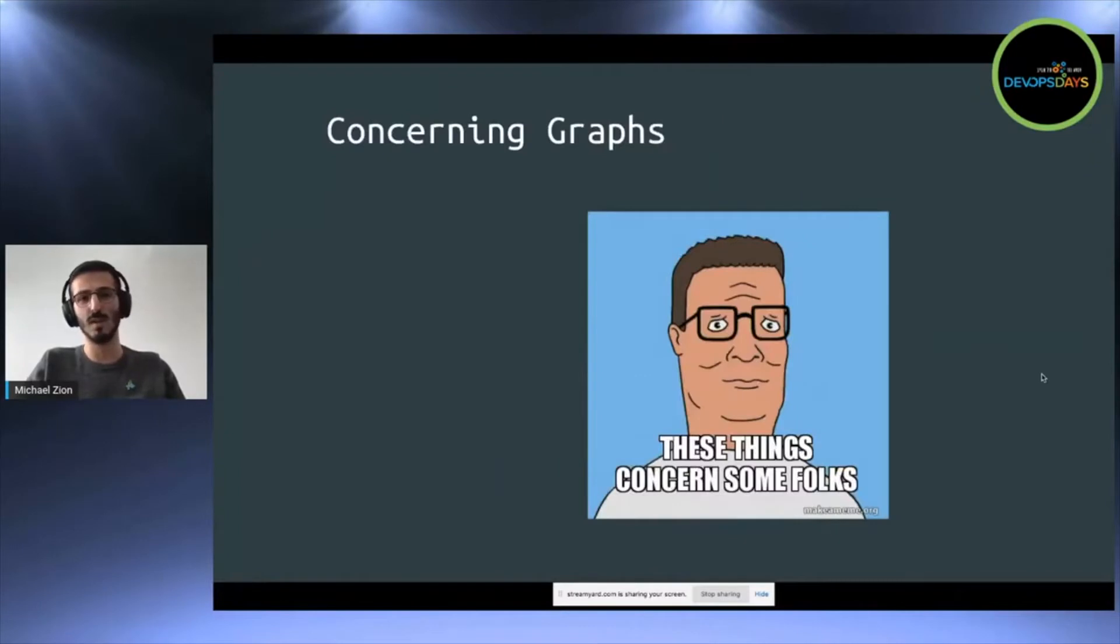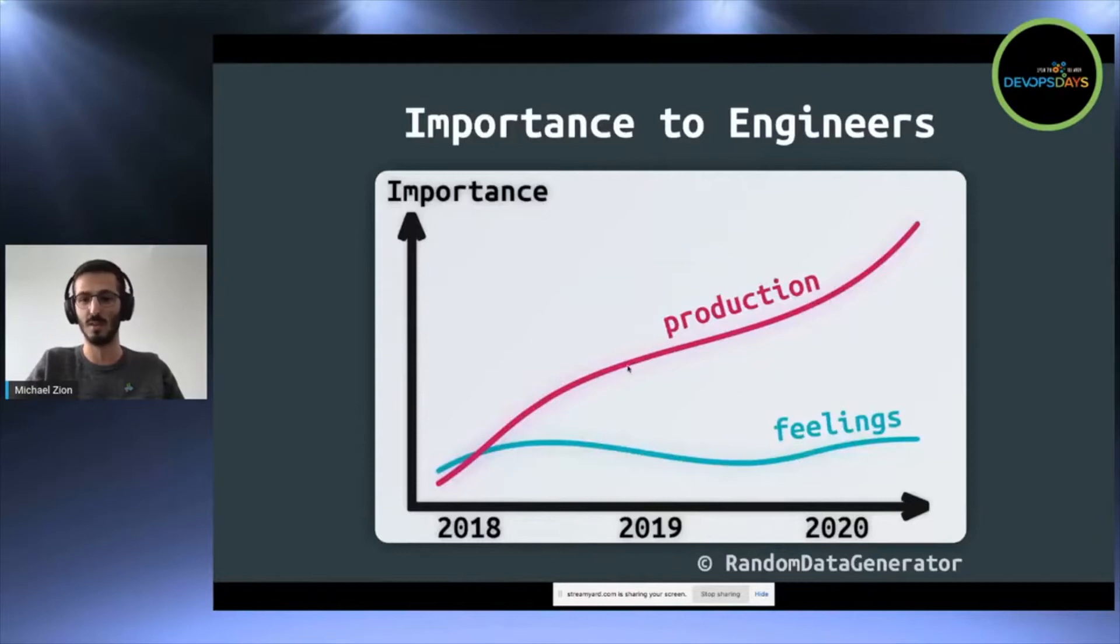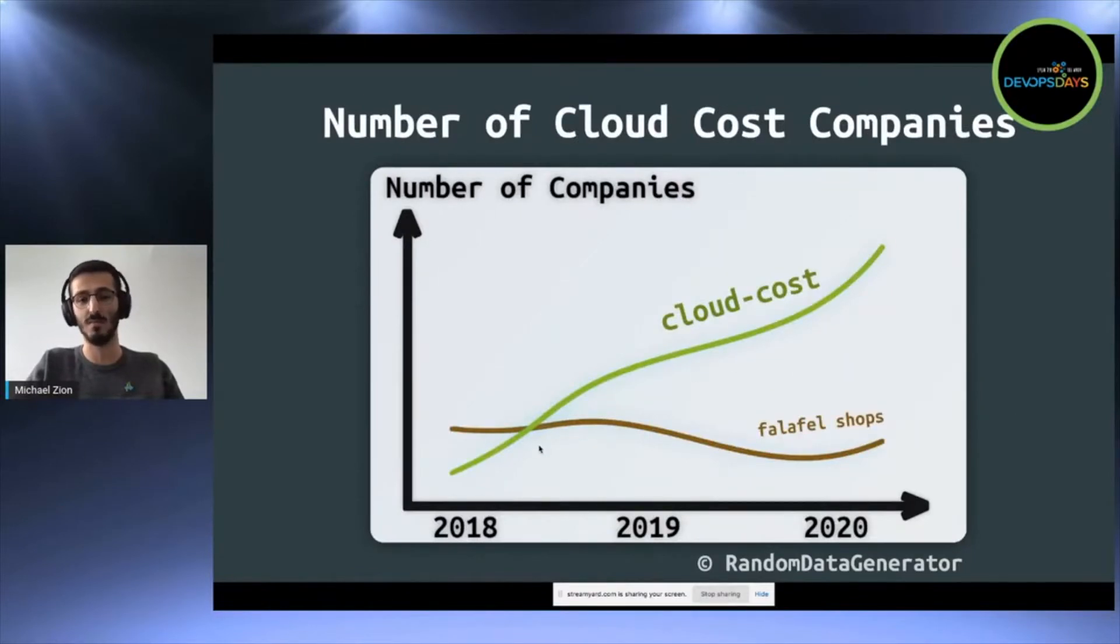So I want to start by showing you some concerning graphs. The first graph is the importance of production to engineers opposed to the importance of feelings to engineers. And you can see the importance of production to engineers is constantly on the rise, which is very concerning, while feelings are pretty much stagnated. Another concerning graph is the number of cloud-cost companies, companies oriented towards saving your money, as opposed to wasting your money. For comparison, you can see the number of falafel shops has stayed completely stagnated. Very concerning observations.